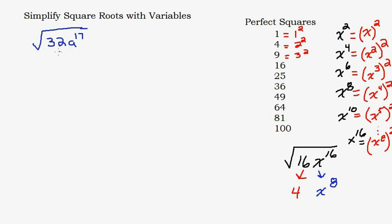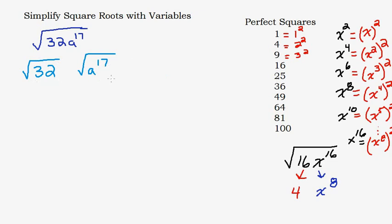Now back to our example: 32 is not on our list of perfect squares and 17 is not divisible by 2. We're going to think of this as two different problems: the square root of 32 times the square root of a to the seventeenth. You'll deal with simplifying the square root of 32 one way and the square root of a to the seventeenth another way.